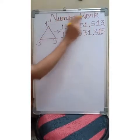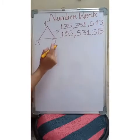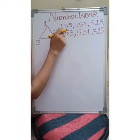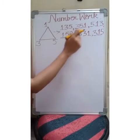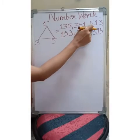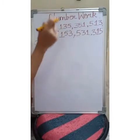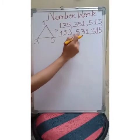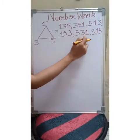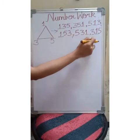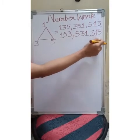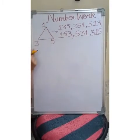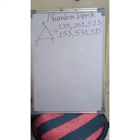So we get six three digit numbers: one hundred and thirty five, three hundred and fifty one, five hundred and thirty one, three hundred and fifteen, one hundred and fifty three, and five hundred and thirty — using the digits one, three and five.